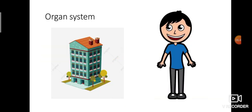The next level is the organ system. To build a house, we need a bedroom, bathroom, kitchen, dining hall, and living room — so many rooms. Like that, different organs join together to form an organ system, which represents the whole human body. So the levels of organization are: cells → tissues → organs → organ system → the whole human body, which is the organism.